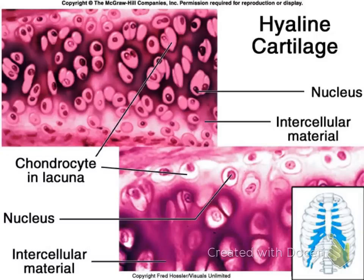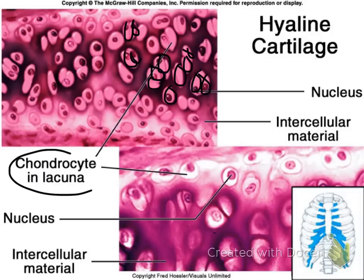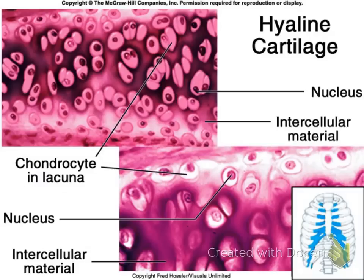Just like bone tissue, you cannot separate the chondrocyte from its lacunae. All of these egg-looking or boiled egg-looking structures are your chondrocytes. They sometimes look like little eyes because they come in pairs — those are your chondrocytes in lacunae. Hyaline cartilage is typically a lighter color with a glassy appearance. If you've ever eaten a chicken drumstick and noticed that almost transparent, slippery material at the ends of the bones — the crunchy part — that's your hyaline cartilage.